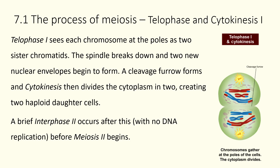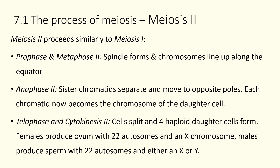In telophase 1, we see the chromosomes at the poles as two sister chromatids — not a pair of homologous chromosomes. The spindle fiber breaks down, we end up with two nuclear envelopes, and we've now got two new haploid daughter cells. What we've done is reduce the number of different chromosomes in the two cells. After a very short interphase 2 — the cell doesn't need to grow or replicate its DNA — we move straight into meiosis 2. In anaphase 2, the sister chromatids separate and move to opposite poles, and each chromatid now becomes the chromosome of the daughter cell.